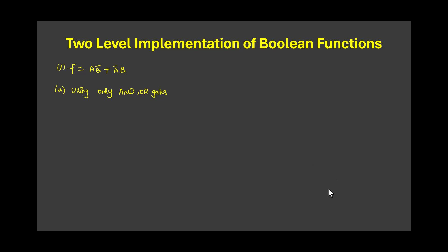Welcome back to Trendy Engineering. I am Dr. Ruma Maheshwari. Next we are going to see the two-level implementation of boolean functions. F is equal to AB̄ plus ĀB. The first implementation will be using only AND and OR gates.